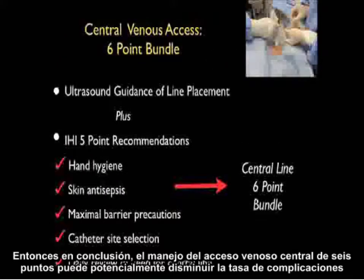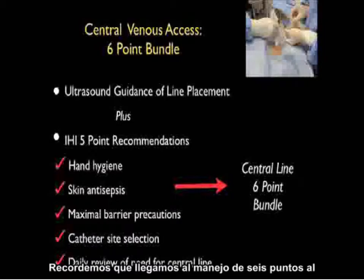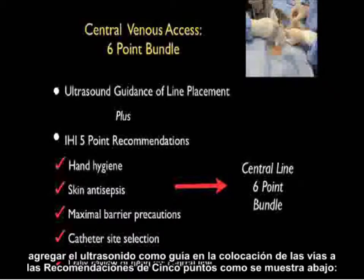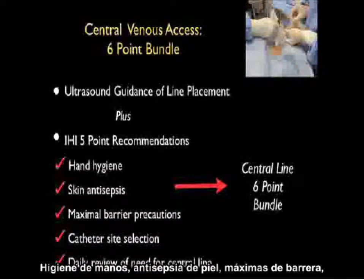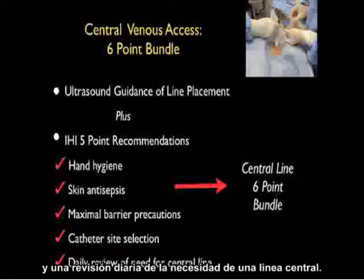In conclusion, the central venous access six-point bundle can potentially decrease the complication rate for patients undergoing this procedure. We arrive at the six-point bundle by adding ultrasound guidance of line placement to the IHI five-point recommendations: hand hygiene, skin antisepsis, maximal barrier precautions, catheter site selection — favoring high lines over low lines — and a daily review of the need for a central line.